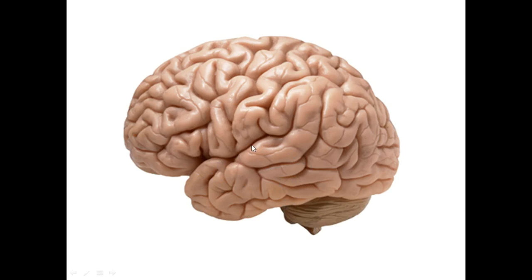On the superior temporal gyrus is where you find the transverse gyrus of Heschl on the inner aspect. This is the temporal pole, which is the human comprehension area of the brain. The middle temporal gyrus is associated with the processing of tertiary visual information.